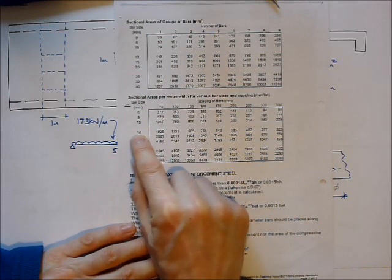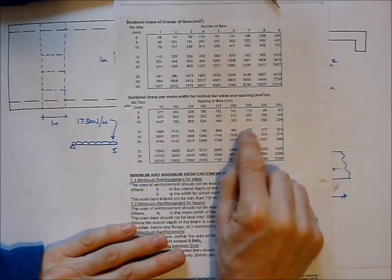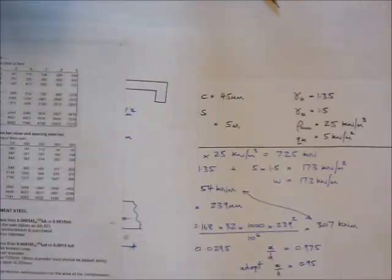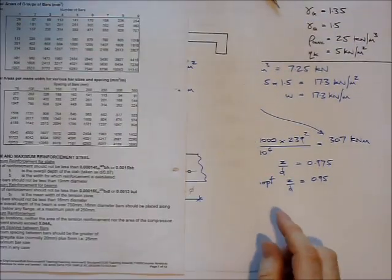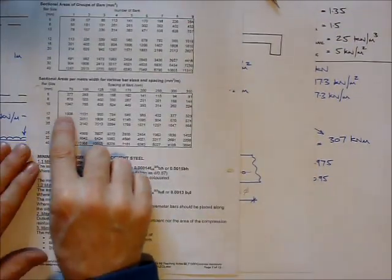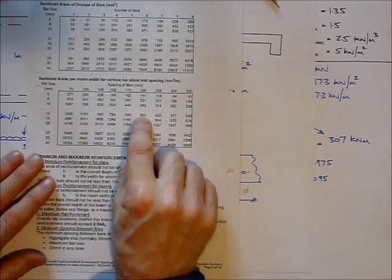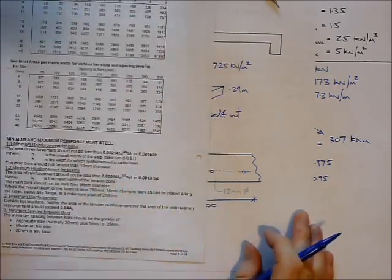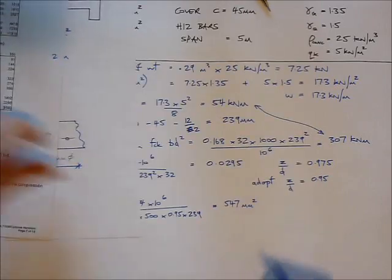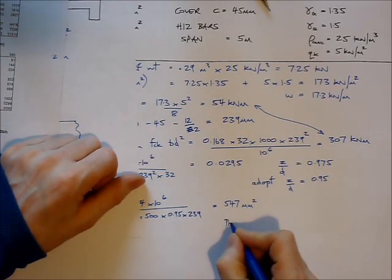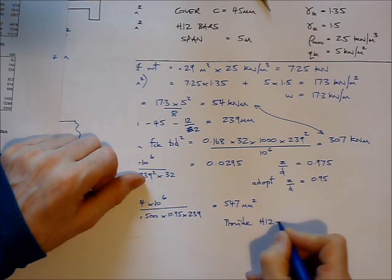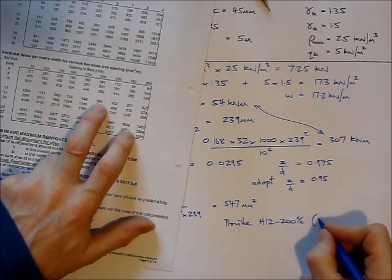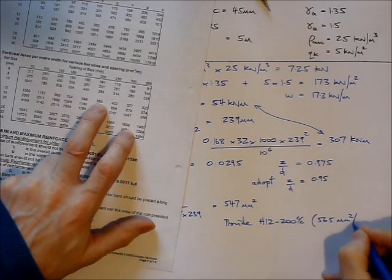So the bar size is 12 millimeters. I'll run across here until I make sure that I've got the correct amount of centers, so that I'm providing at least 547 square millimeters of steel. So 12mm bars, I have to provide them at 200 millimeter centers, and that gives me 565 square millimeters of steel. So we provide H12 at 200 centers, and that gives 565 square millimeters per meter run.